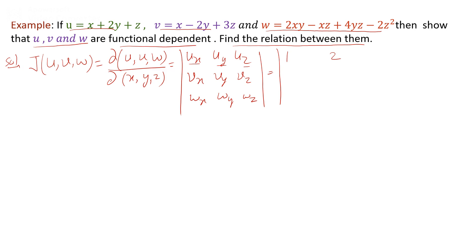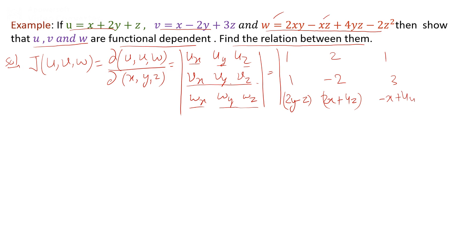The partial derivatives of u with respect to x, y, z give us 1, 2, 1. The partial derivatives of v with respect to x, y, z give us 1, -2, 3. The partial derivatives of w with respect to x gives 2y - z, with respect to y gives 2x + 4z, with respect to z gives 4y - 4z. We now simplify this determinant.